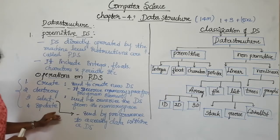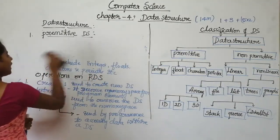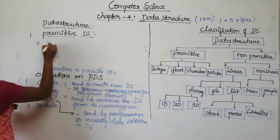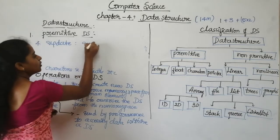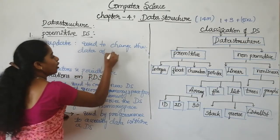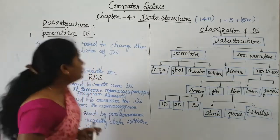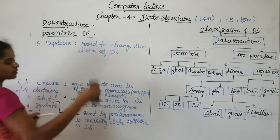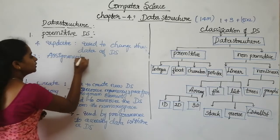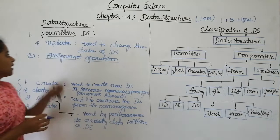The fourth operation is the update operation. This update operation can be used to change the data of the data structure. The best example of this update operation is the assignment operator.